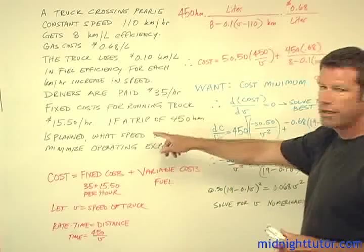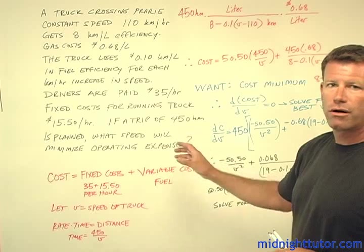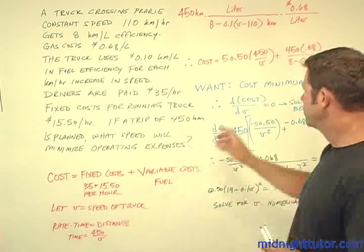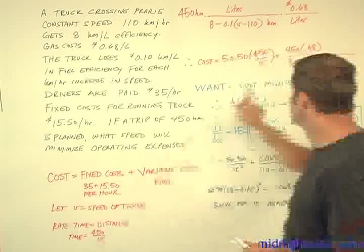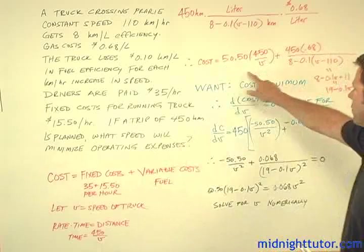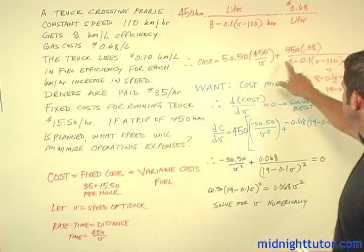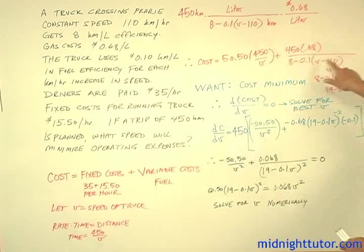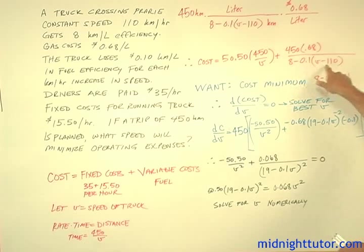We can plug that in and come up with an equation for overall cost, which is the $50.50 times the time (450 over V), plus the fuel cost. Both cost components are affected by velocity. Simplifying the denominator of the fuel efficiency term — 8 minus 0.1V plus 11 — gives us 19 minus 0.1V.